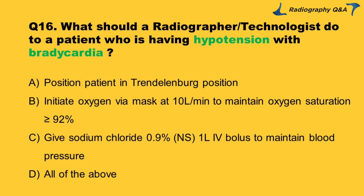Question 16: What should a radiographer/technologist do for a patient having hypotension with asthma or bradycardia? Option A: position patient in Trendelenburg position. Option B: initiate oxygen via mask at 10 L/min to maintain oxygen saturation ≥92%. Option C: give sodium chloride 0.9% NS 1 liter IV bolus to maintain blood pressure. Option D: all of the above. Right answer is Option D.